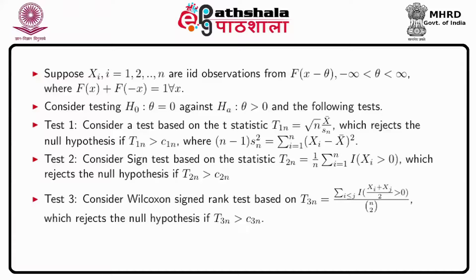The second test is the sign test, where the test statistic is T2_n equal to (1/n) times the summation of the indicator that X_i is greater than 0, and the test rejects when T2_n is greater than C2_n.